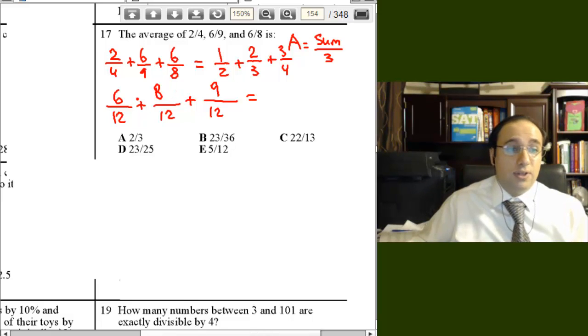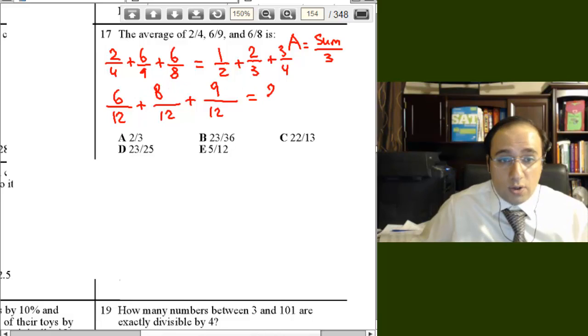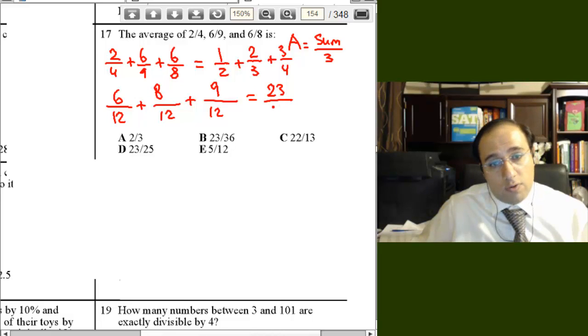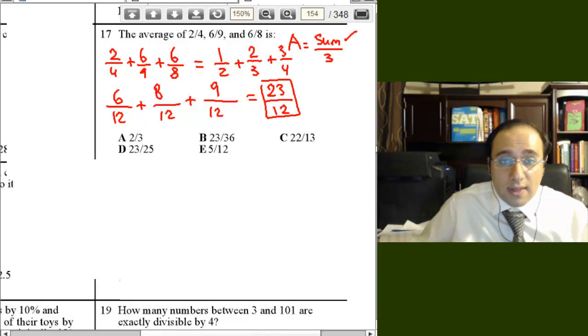9 plus 8 is 17, 17 plus 6 would be 23, so it's 23 over 12. What is 23 over 12? That is the sum, that's just the sum.